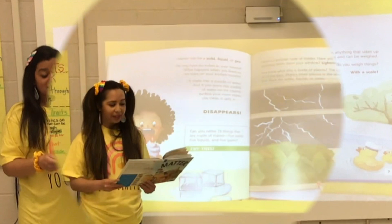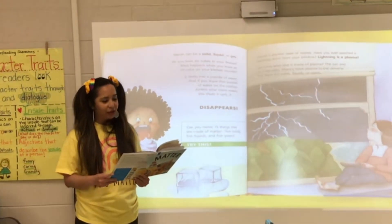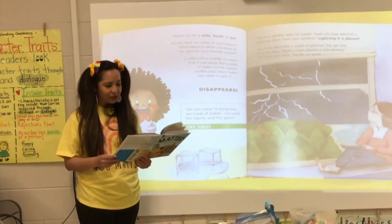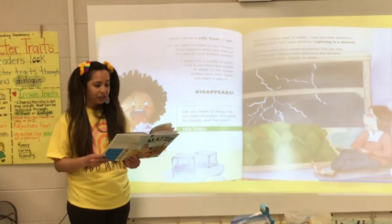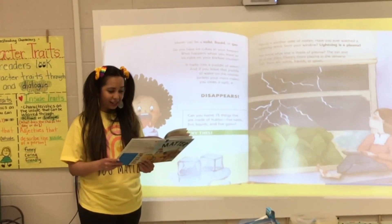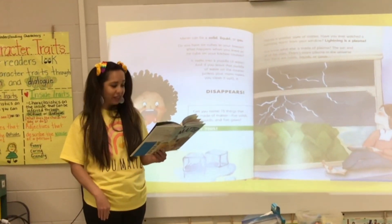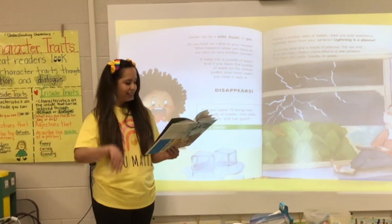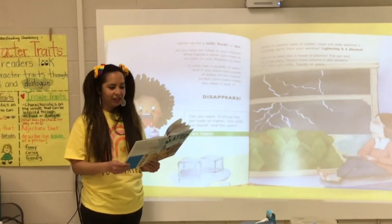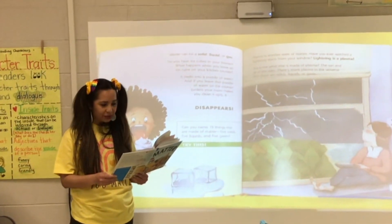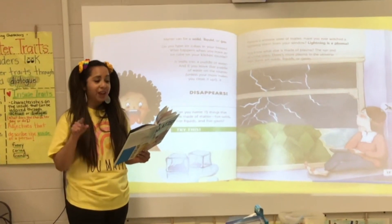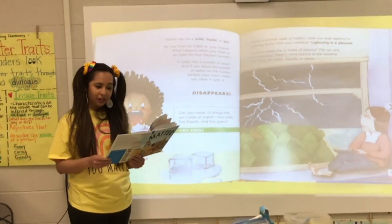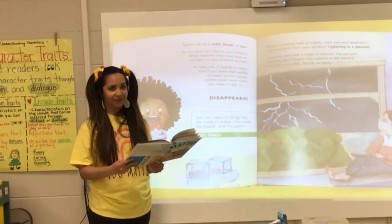Matter can be a solid, liquid, or gas. Do you have ice cubes in your freezer? What happens when you leave an ice cube on your kitchen counter? It melts into a puddle of water. And if you leave that puddle of water on the counter, unless your mom makes you clean it up, it disappears. Can you name 15 things that are made of matter — 5 solids, 5 liquids, and 5 gases? Plasma is another state of matter. Have you ever watched a lightning storm from your window? Lightning is a plasma! The sun and all of the stars are made of plasma. There is more plasma in the universe than there are solids, liquids, or gases.